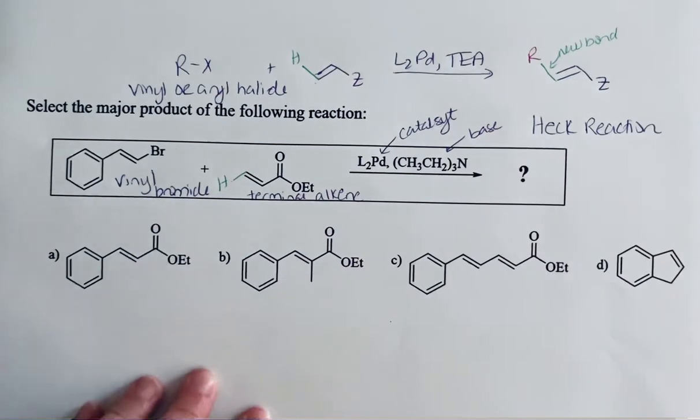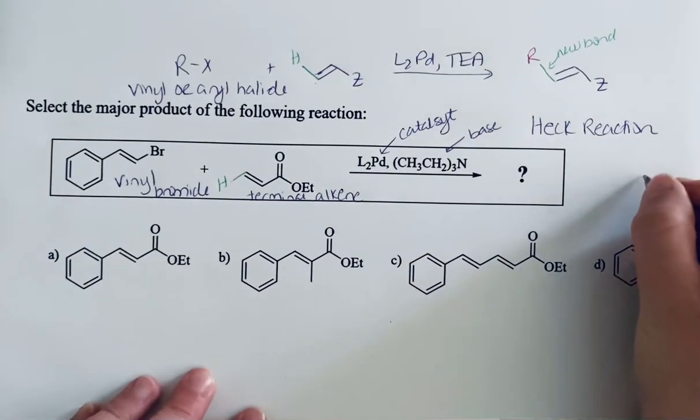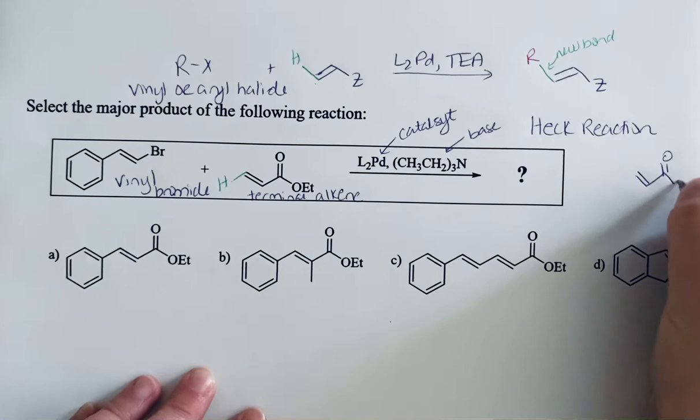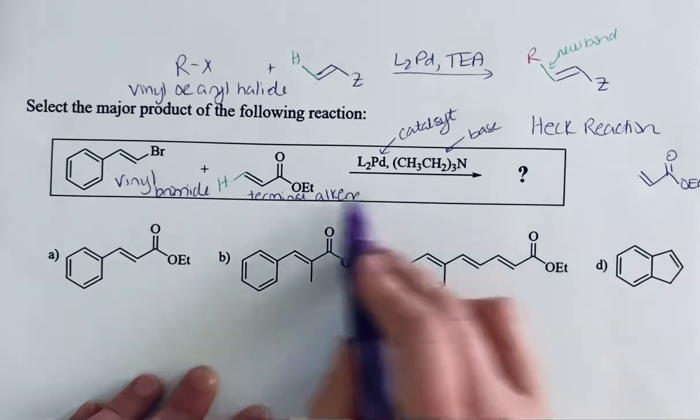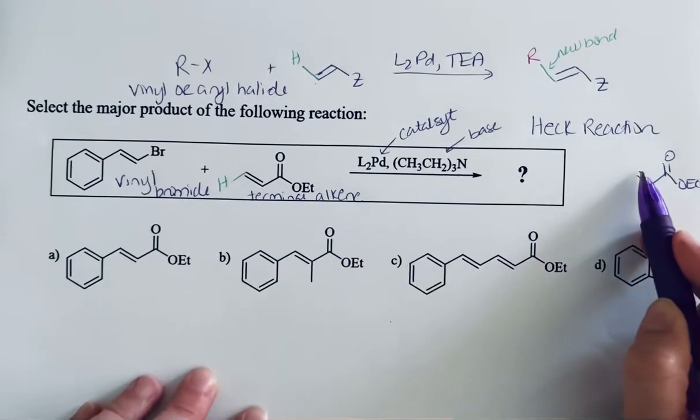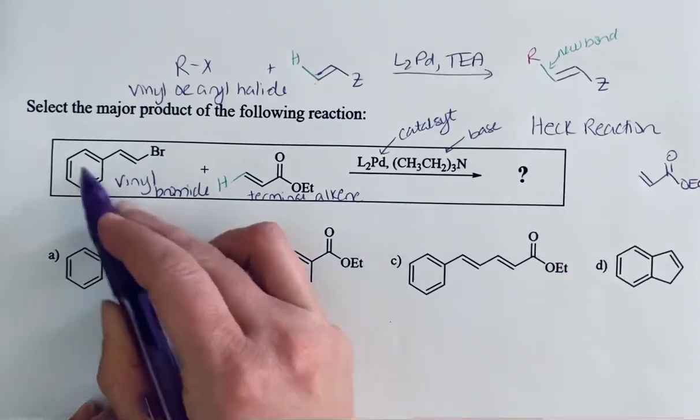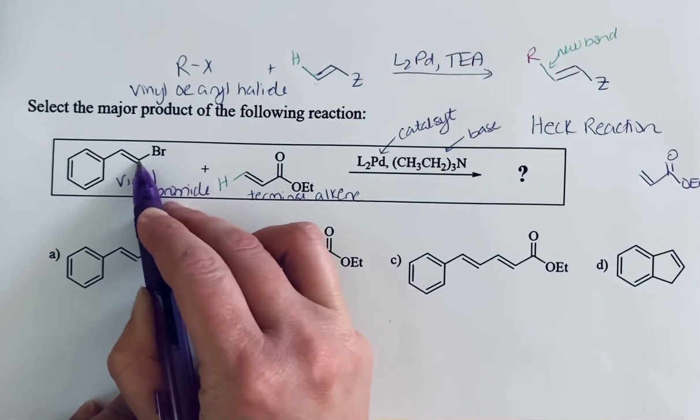So we're going to draw our alkene product. This is the alkene from here. Here's where our trans hydrogen is and we're going to replace that with the bond to this carbon atom right here. So we can show our new bond.